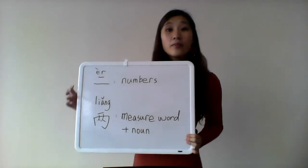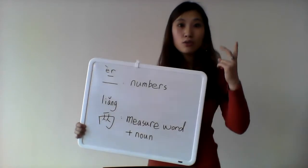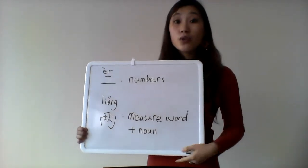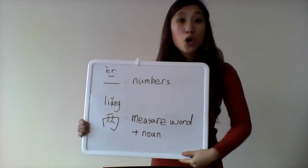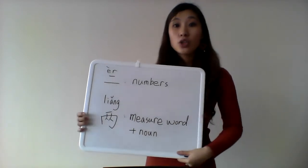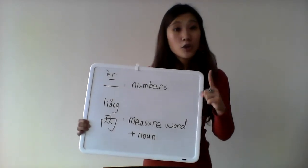And then, you have those kind of phrases for two books, two people, two years, you use liǎng. So, when you are actually talking about things, the quantity of the things, you use liǎng.